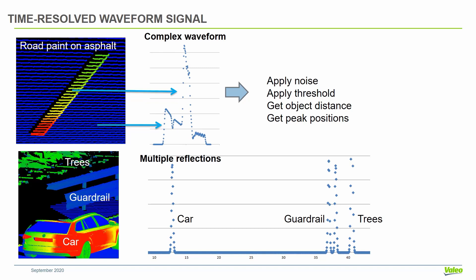We can also have multiple reflections using this approach. In this case, our pixel is seeing the car - this reflection - then it sees the guard rail, these two peaks, and it can see the trees in the background, which is the last peak. If you apply a threshold, you will detect several peaks, and then you can use your algorithms to select one of the peaks.